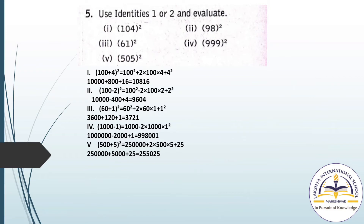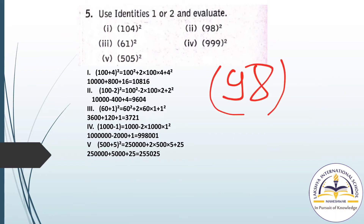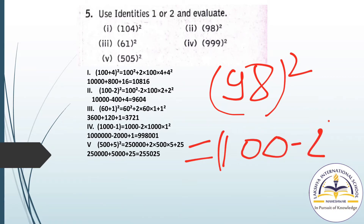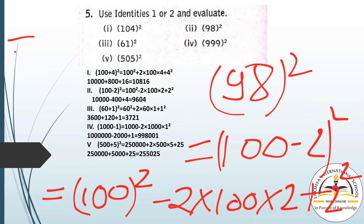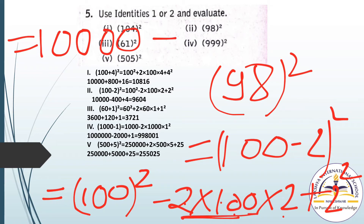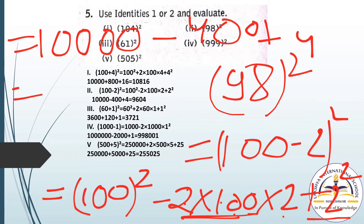Question number 2: find 98 whole square. We write 98 as (100 - 2) whole square. Applying Identity 2: 100 square minus 2 into 100 into 2 plus 2 square. That gives 10000 minus 400 plus 4, which equals 9604.